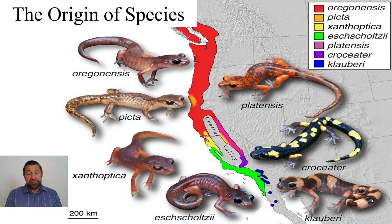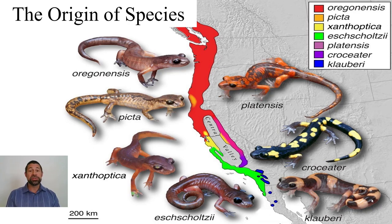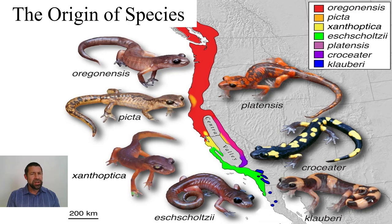Greetings. Professor Jared Rathel here. I welcome you to the fourth lecture in our second unit. Today we're going to be focused on what Charles Darwin called the mystery of mysteries — that is the origin of new species. Where do new species come from? How do new species actually emerge?